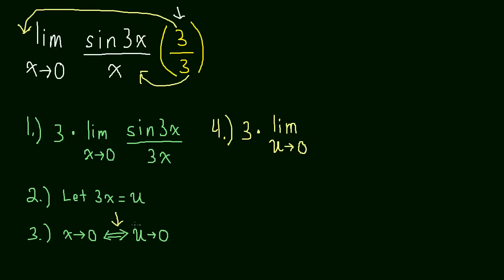So we can be confident in writing the limit as u approaches 0. We can make that substitution because basically we showed ourselves that these two statements, if one is true, the other has to be true. So we have the limit as u goes to 0 of the sine of u over u.